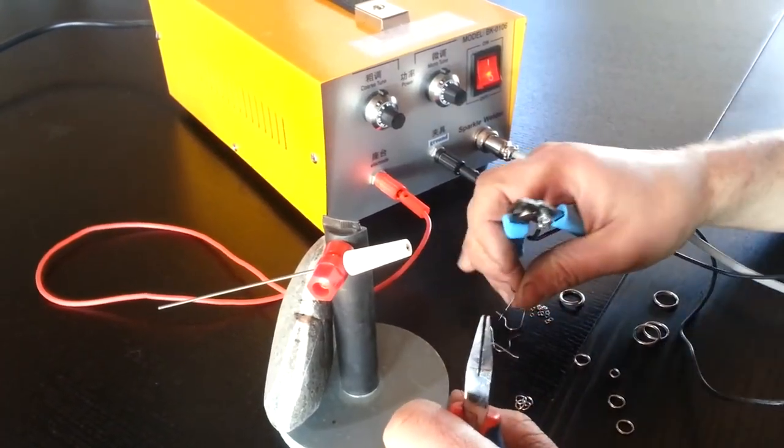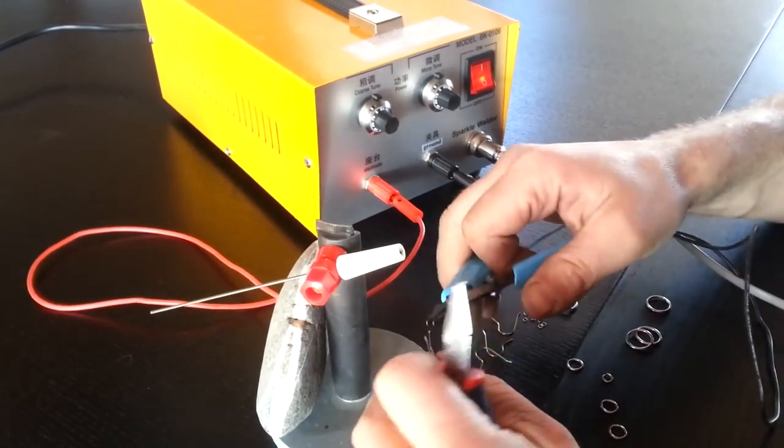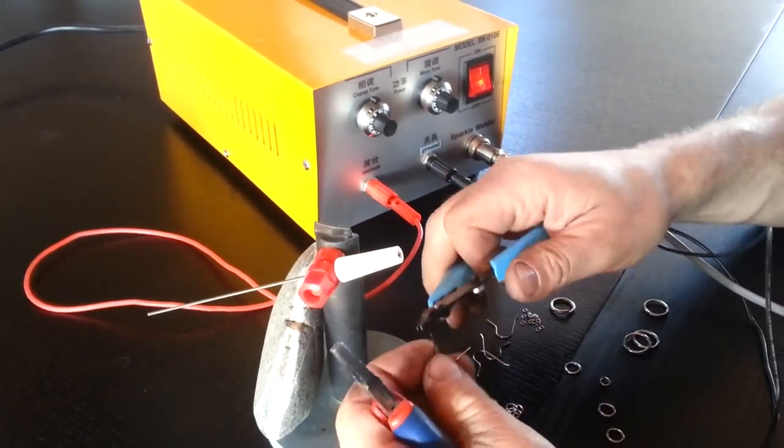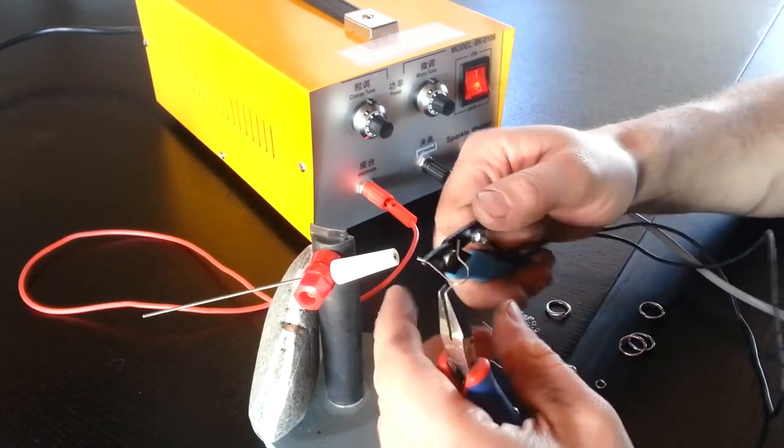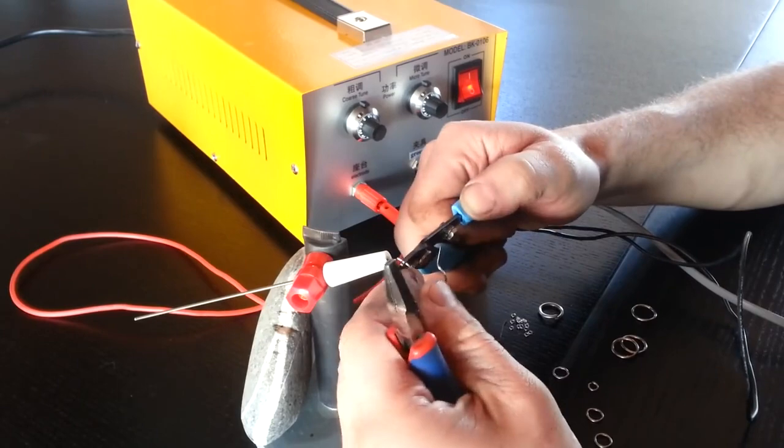Hi, this is John from The Ringlord. I am demonstrating our jewelry welder. It's a pulse arc welder which has a tungsten electrode and when you push the foot switch makes a really fast weld.